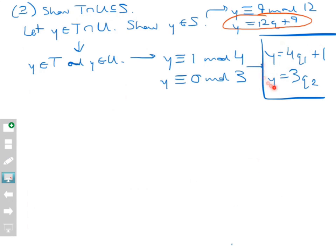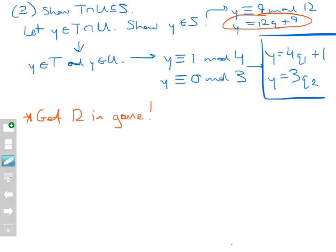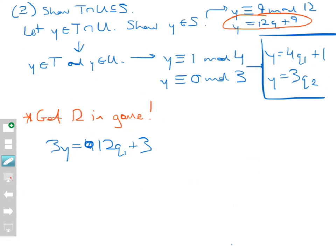Right now I don't see any 12s, so the goal is to get the number 12 into the game. I take Y equals 4Q₁ plus 1 and multiply both sides by 3, giving 3Y equals 12Q₁ plus 3. That gets 12 into the picture. Then I take the second equation Y equals 3Q₂ and multiply both sides by 4, giving 4Y equals 12Q₂. Now I have 12 in the game from both equations.